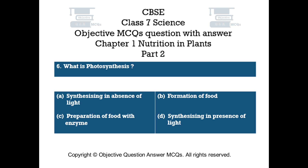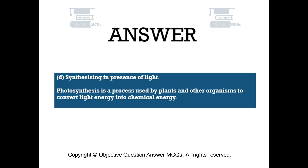Question number 6: What is photosynthesis? Option A: synthesizing in absence of light. Option B: formation of food. Option C: preparation of food with enzyme. Option D: synthesizing in presence of light. The right answer is option D — synthesizing in presence of light. Photosynthesis is a process used by plants and other organisms to convert light energy into chemical energy.